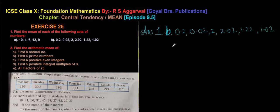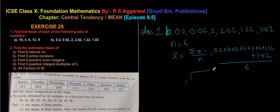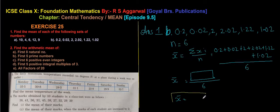There are 6 observations, so n = 6. Write down the formula: x̄ = Σxᵢ / n = (0.2 + 0.02 + 2 + 2.02 + 1.22 + 1.02) / 6. Add all the values, write that sum, divide by 6, and write the final answer in a box.